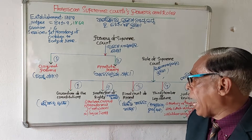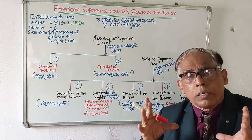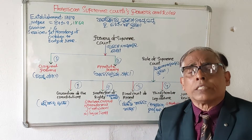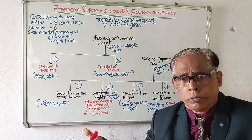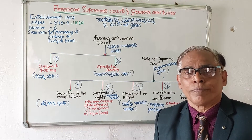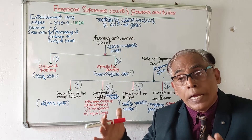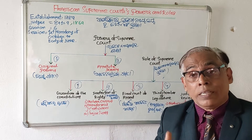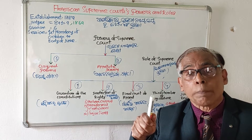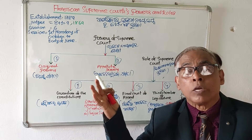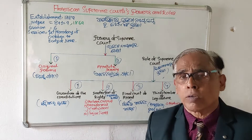The third role is Final Court of Appeal. Whenever any citizen or institution in America is not satisfied with the verdict of a lower court, they can appeal to the American Supreme Court. The Supreme Court hears appeals against decisions of state courts and other lower courts, and the decision of the American Supreme Court is final — a person cannot appeal anywhere else and must accept its decision, as it is the topmost court in America.